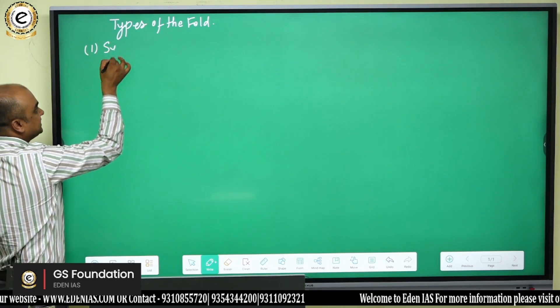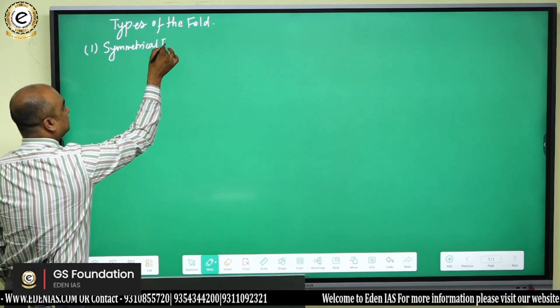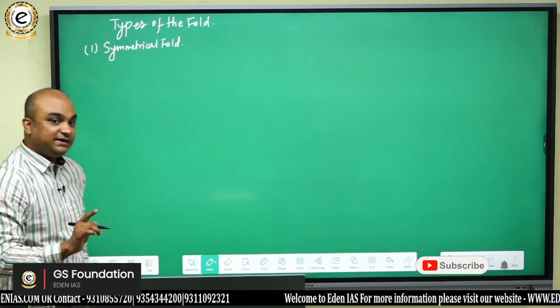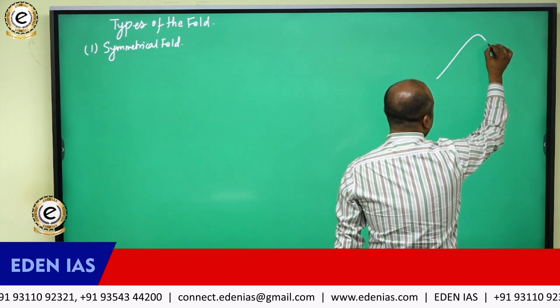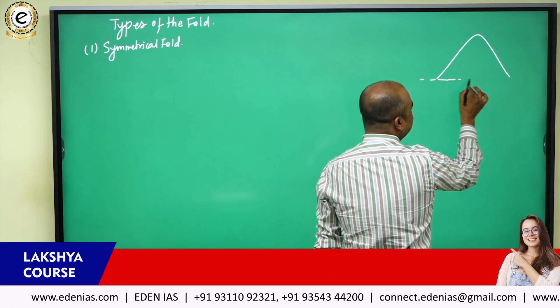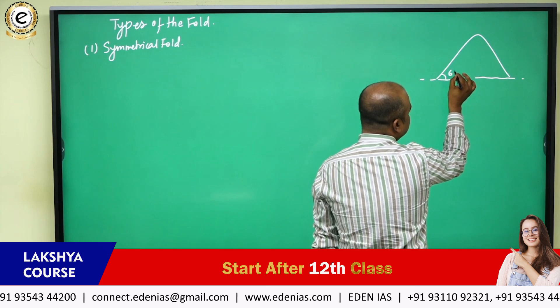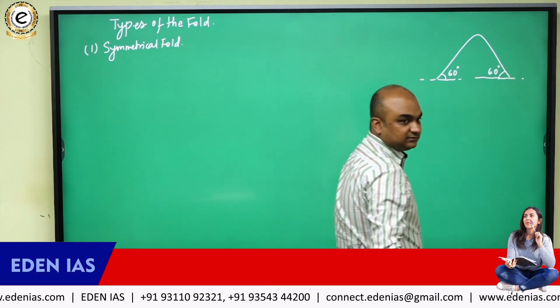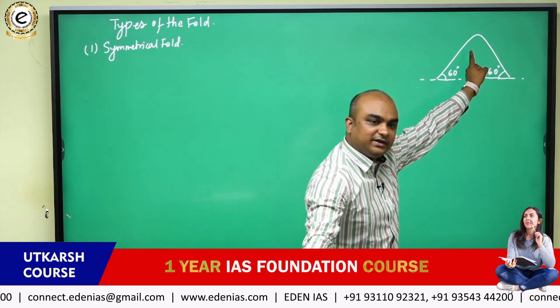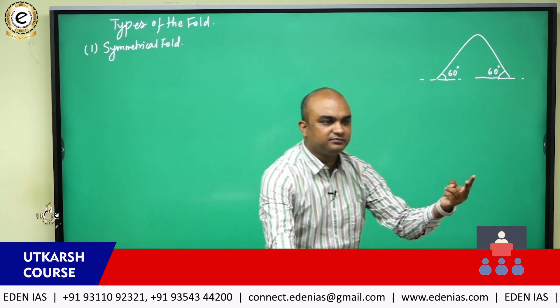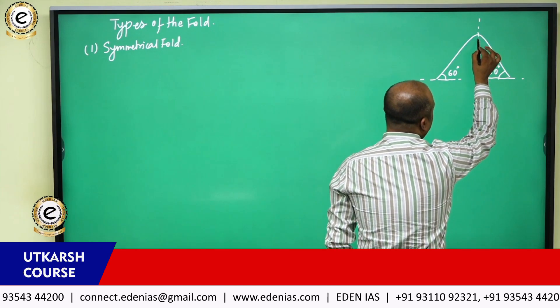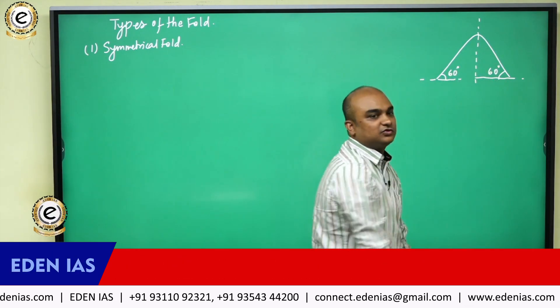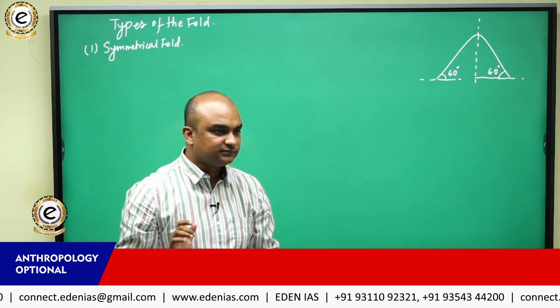The first type of fold is the symmetrical fold. A symmetrical fold is one when both the limbs make the same angle of dip. That fold is a symmetrical fold — it could be an anticline. So if this side is 60 degrees, this side is also 60 degrees. Dip is the angle between the limb and the horizontal. If you cut the fold into half, one half will superimpose over the other half completely. That is a symmetrical fold.